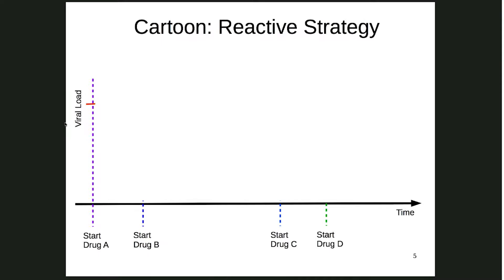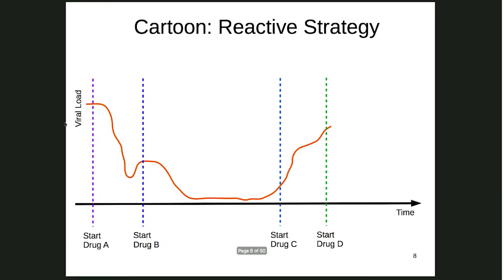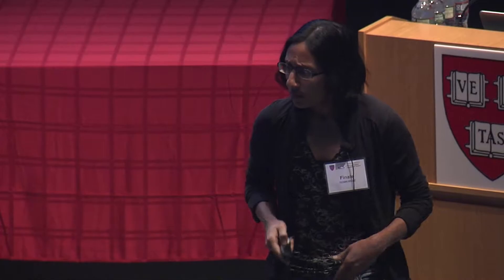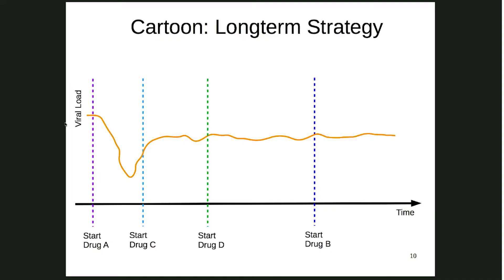Let's illustrate that with a cartoon. Say you have a patient with a viral load that's too high, so you give drug A — it works for a bit, then resistance builds, the viral load goes up. You try drug B, it goes down, then back up. You try drug C, but drug B caused resistance to drug C too. You try drug D — same problem. Now you're in trouble.